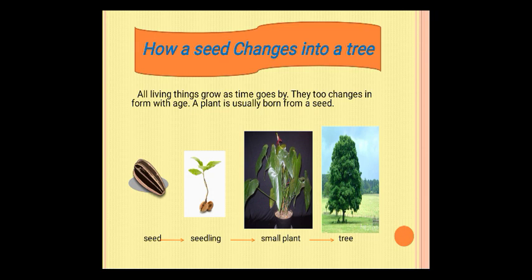Woh apni age ke saath apni form ko change karti hai. Form matlab unke jo shape hooti hai, usmein changes hoti hai, unki length mein changes hoti hai. A plant is usually born from a seed — ek jo plant hoota hai, woh seed se paida hoota hai.